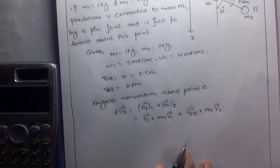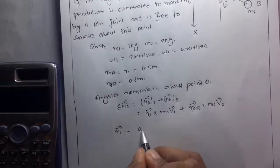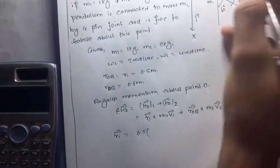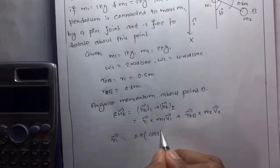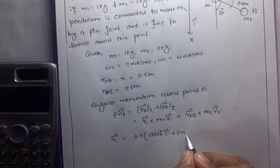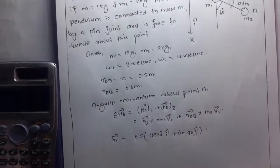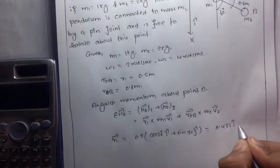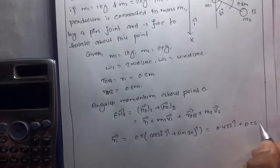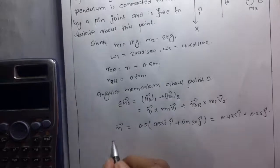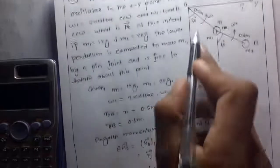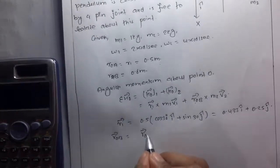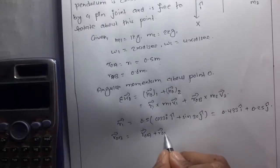Finding r1: r1 = 0.5 m in the direction of i and j. With a 30° angle, r1 = 0.5 cos30° i + 0.5 sin30° j, which gives 0.433 i + 0.25 j. Now we need to find r_OB, which equals r_OA plus r_AB.